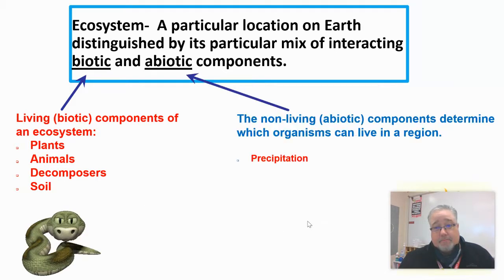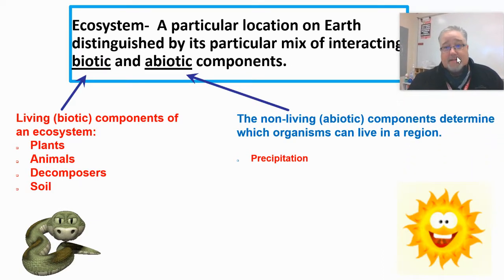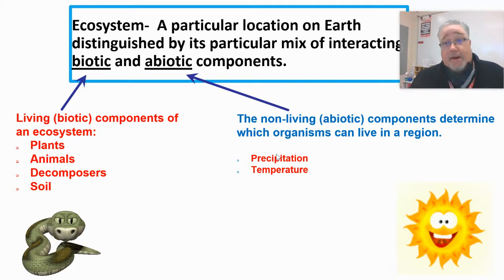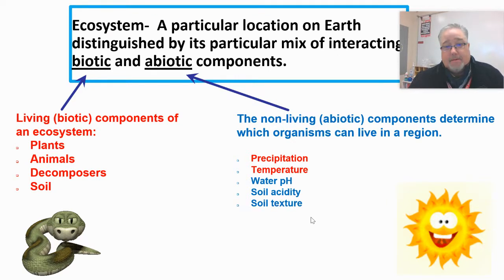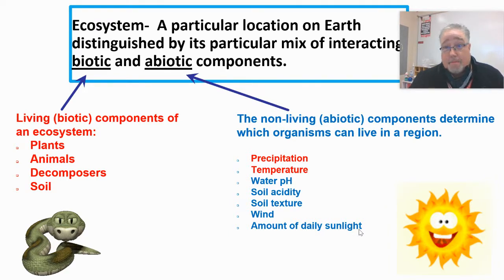Abiotic factors are all the non-living things. For example, rainfall — in the desert there's a certain amount of rainfall that happens every year. The temperature in the desert. Water pH — there may not be a lot of water in the desert, but if there is, that water has an acidity level, which is an abiotic thing. Soil acidity, soil texture, wind, and the amount of daily sunlight available. A desert receives a different amount of sunlight per day than what we get here in Crown Point.